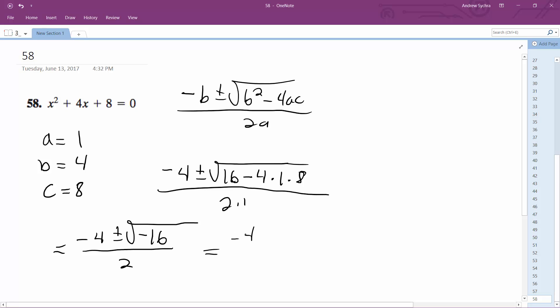We get negative 4 plus or minus 4i over 2. Simplifying it down, we end up with negative 2 plus or minus 2i. And that's it.